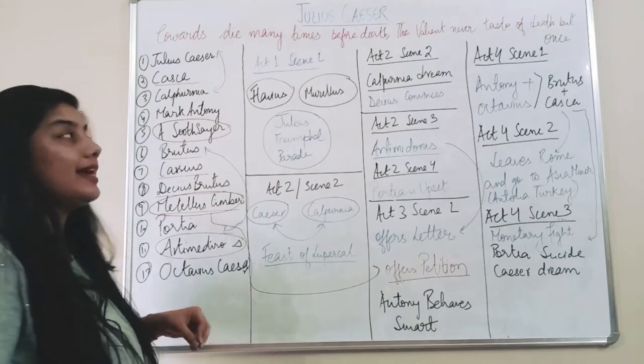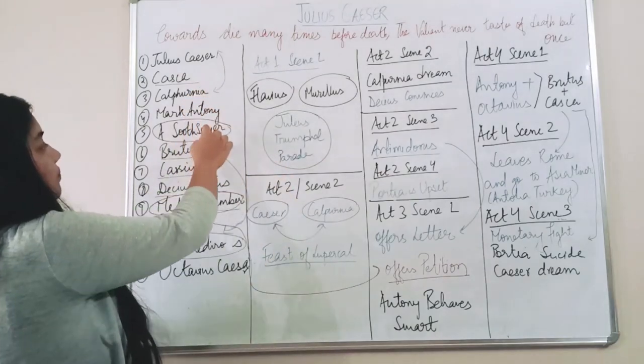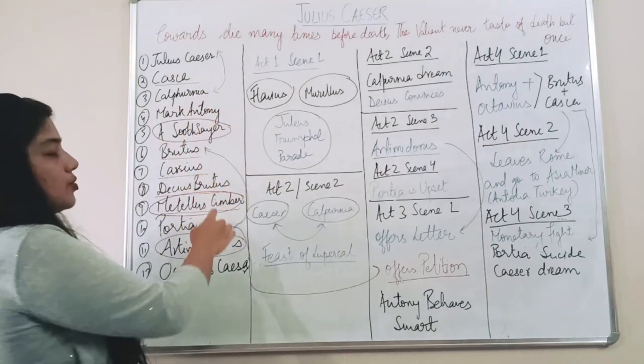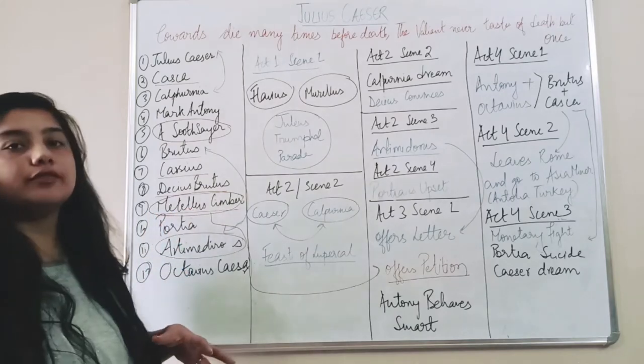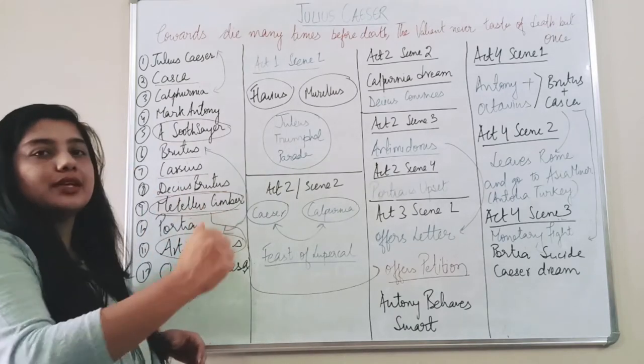And he is about to speak something and in the middle of it, the main conspiracy takes place. Casca, Brutus, Cassius, Decius Brutus, Metellus Cimber, each and every one of them goes and stabs him on his back.